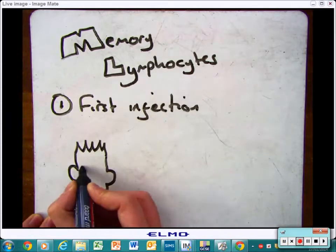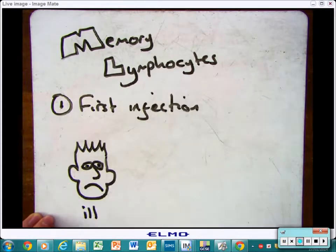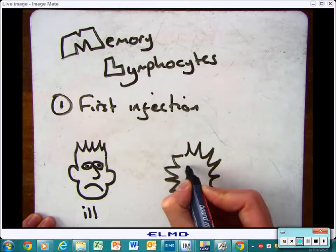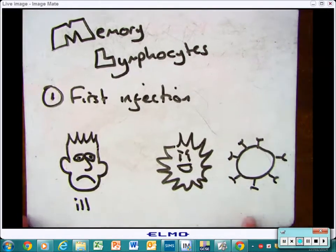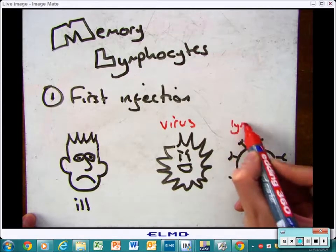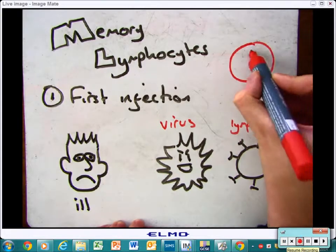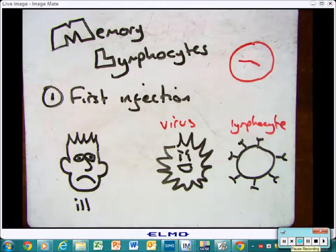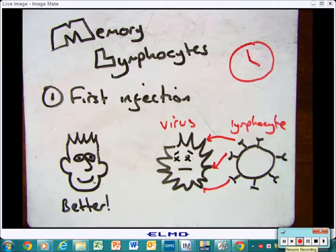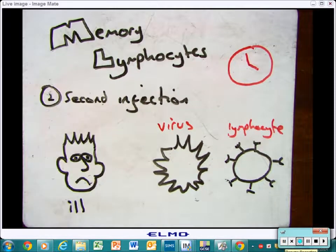Just a bit of a recap. First of all, you get infected, so you become ill. The virus gets into the body and then a pathogen will come along. It will produce antibodies and those antibodies help to kill the virus. This will take quite a long time, but eventually the virus will die and you become better.